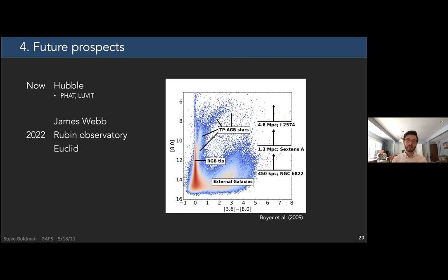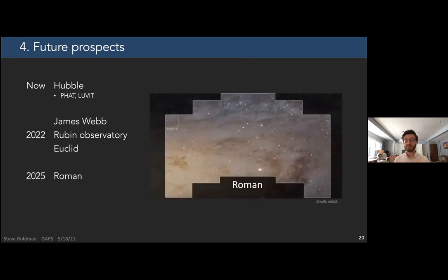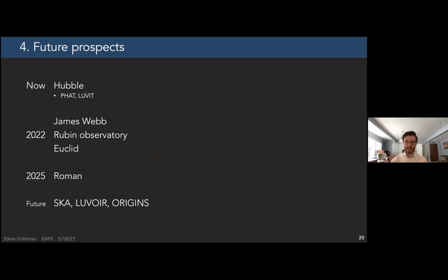And then also with Euclid, we'll have a lot of TPAGB candidates that are detected, something similar to two mass but much deeper. A little bit farther down the road, we'll have Roman, which is similar to Hubble, but with much more surveying capacity. Here, I'm showing the footprint of Hubble compared to the footprint of Roman, so that will help us a lot in terms of identifying thermally pulsing AGB candidates. And then even farther down the road, we'll have the SKA and its pathfinder surveys, which will be great for maser work. We'll have the Origins for a lot of studies on the dust and the dust properties, and then a bunch of other planned missions. So exciting times.